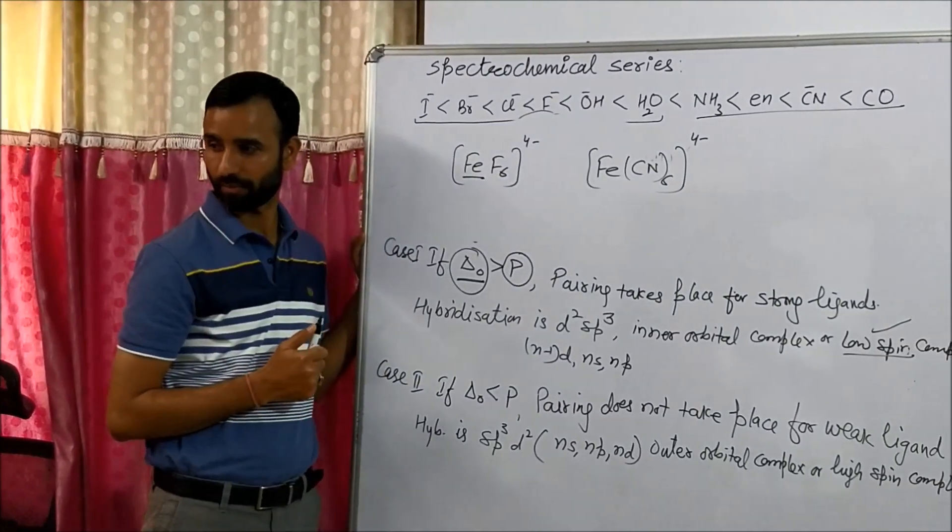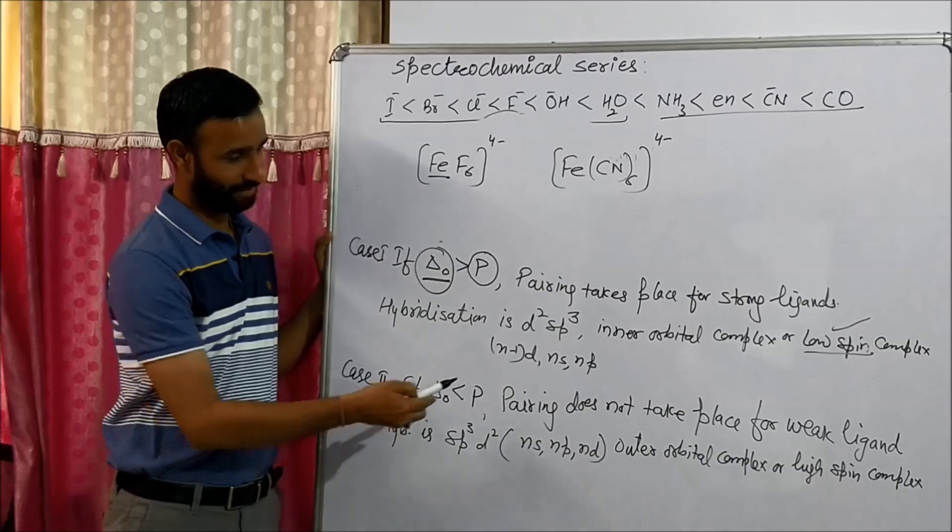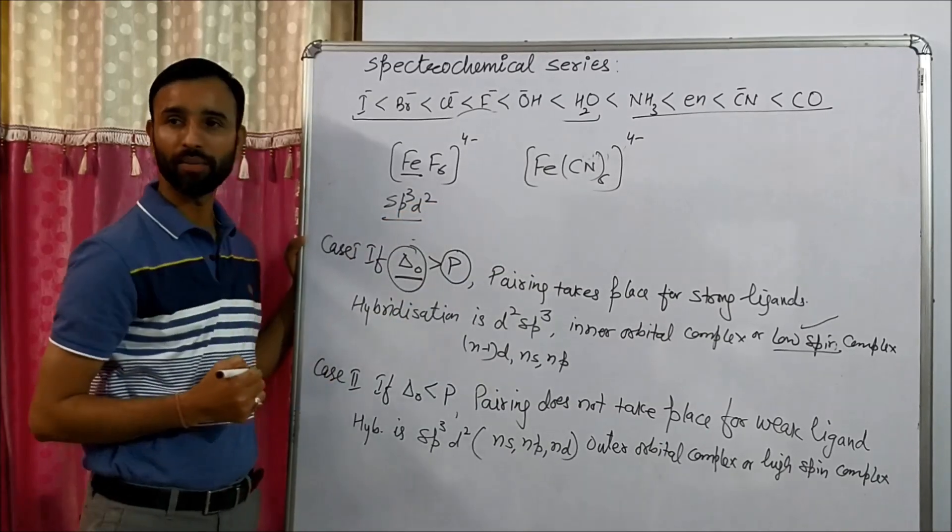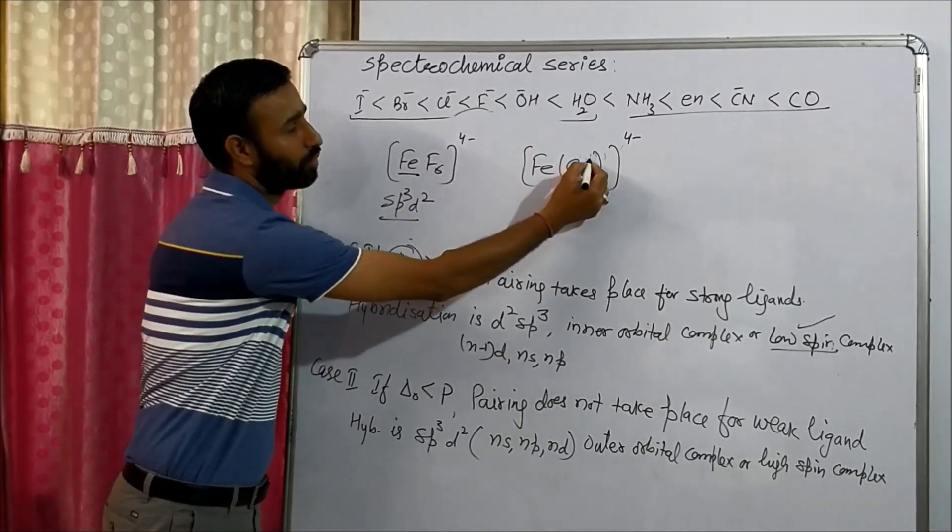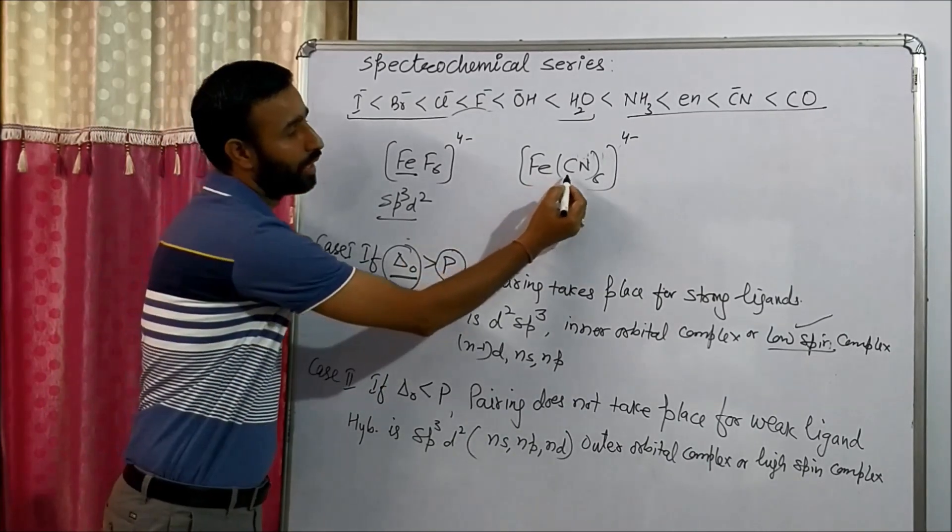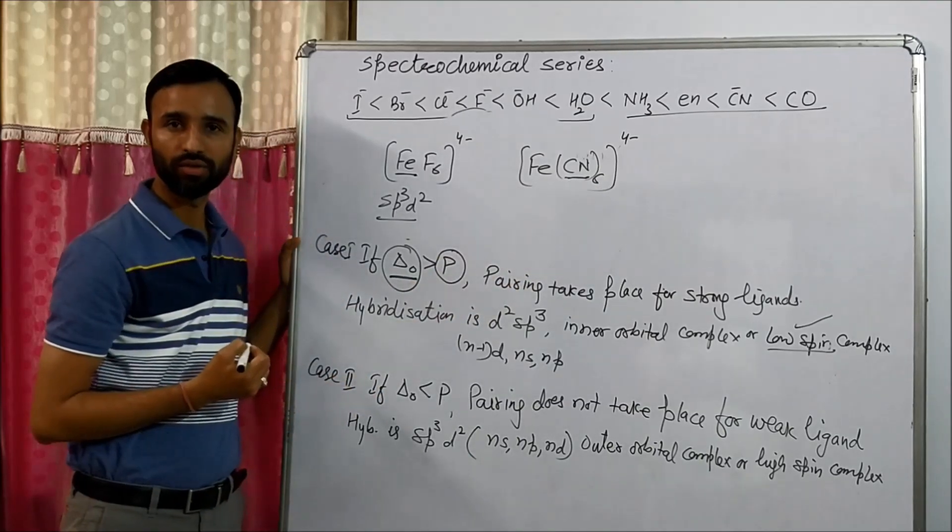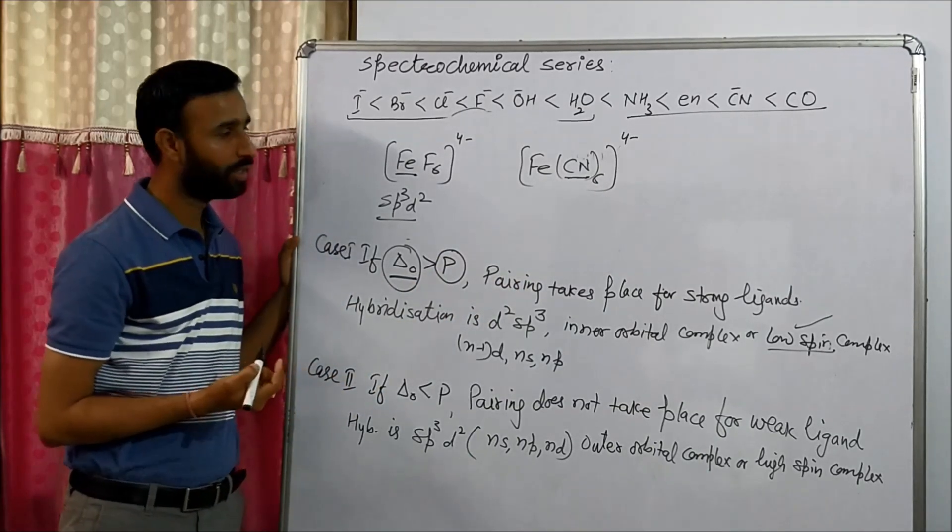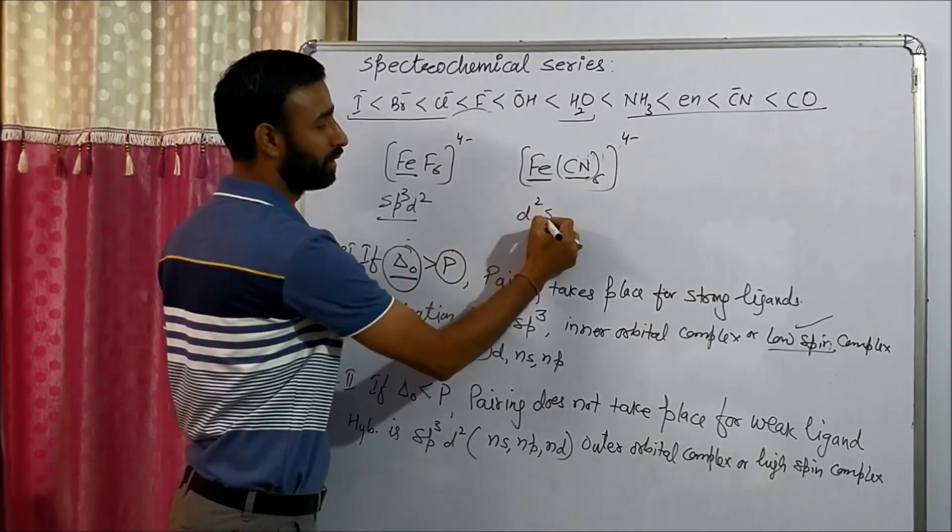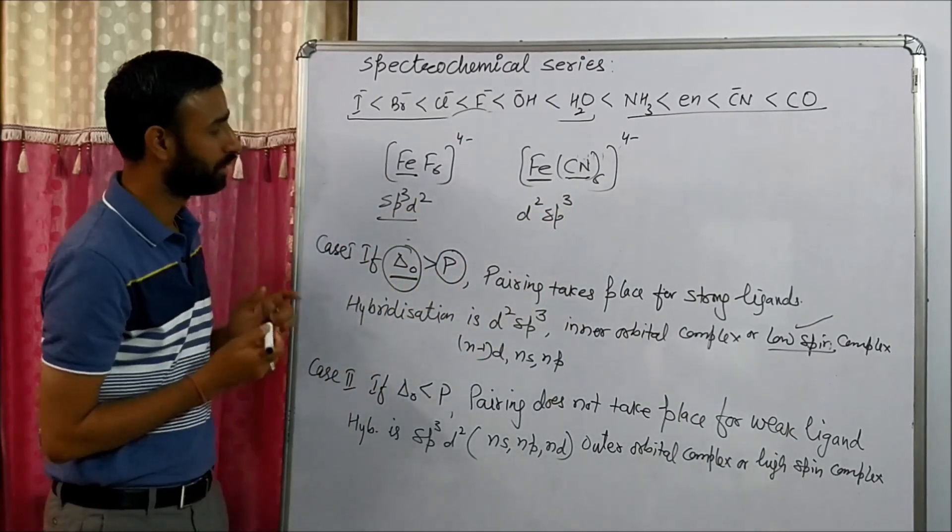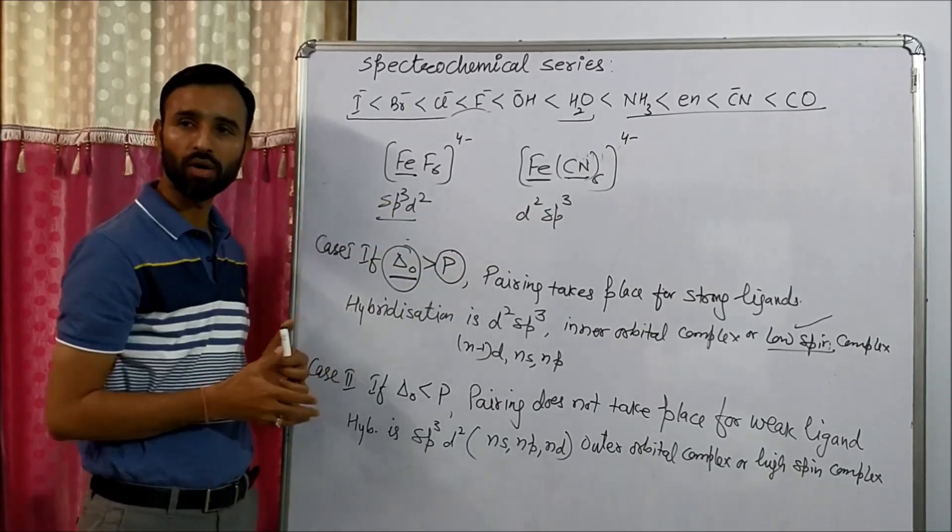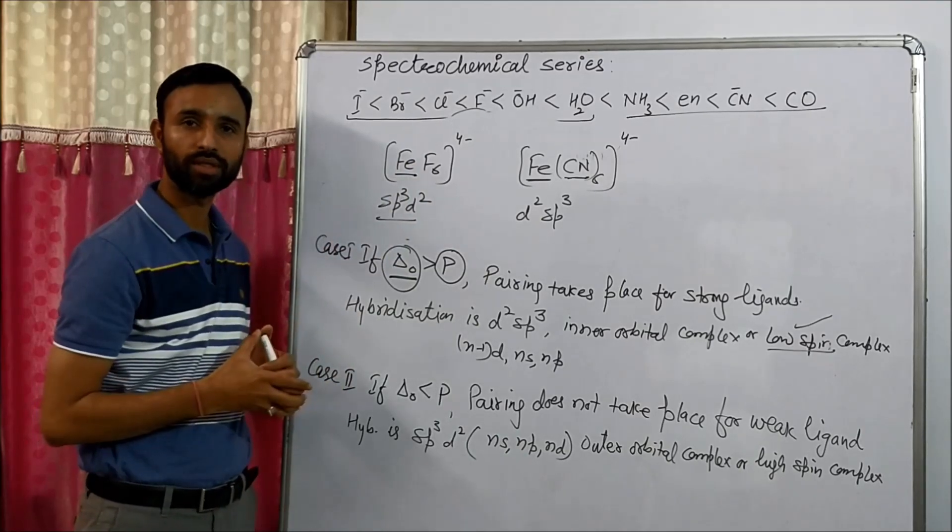Yes. This has sp3d2 hybridization. Now come to this part, Fe(CN6)4-. Now in this case, cyanide is strong ligand. If cyanide is a strong ligand, what is the hybridization? d2sp3. Now it is d2sp3. That means it is high spin complex? It is low spin complex. It is outer orbital complex? It is inner orbital complex.